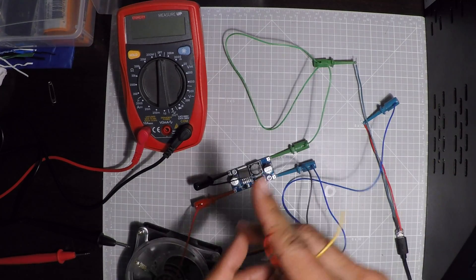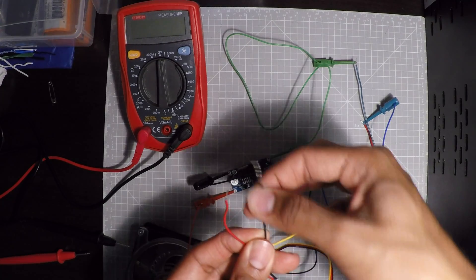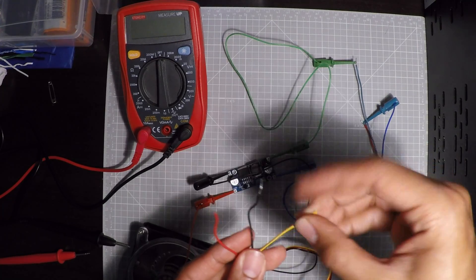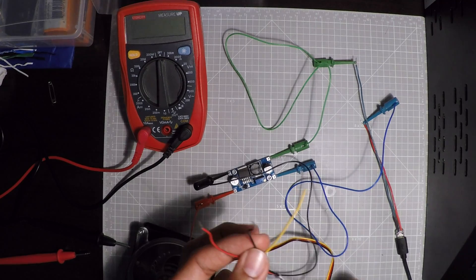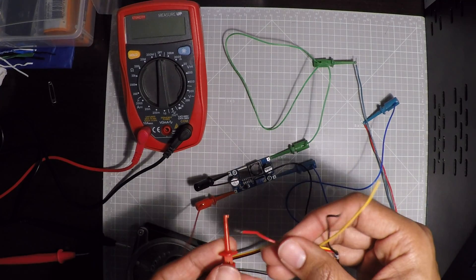This is a computer fan, so we have positive, negative, and this data wire. The data wire usually tells you the temperature or the speed.